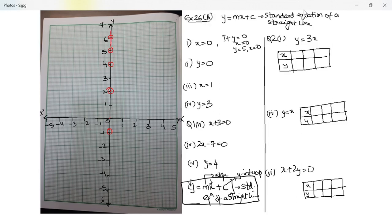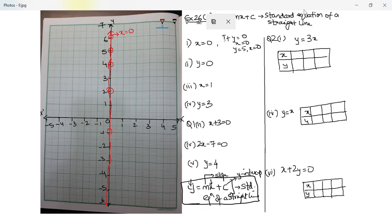So this line, which is the y-axis — I'll draw it in a different color, you draw it with a scale — this line is x equal to zero, because whatever be the value of y, x remains zero.